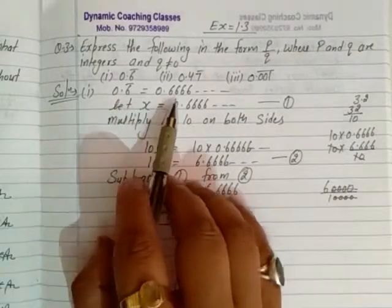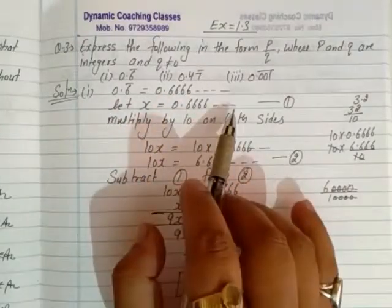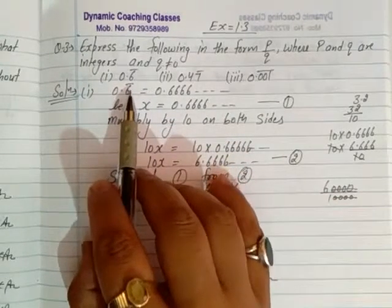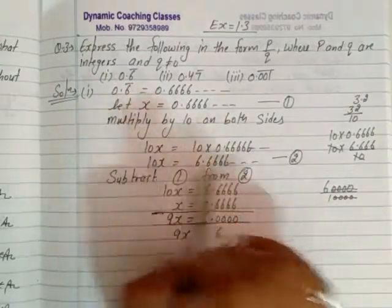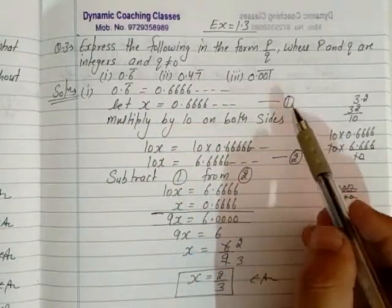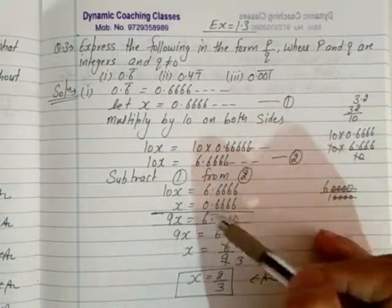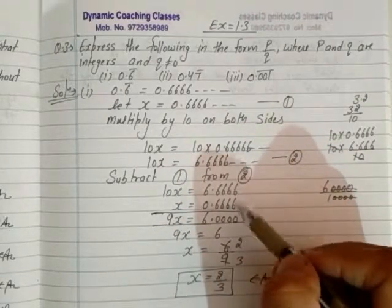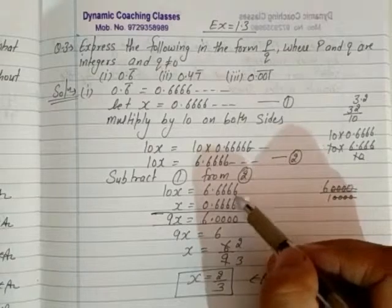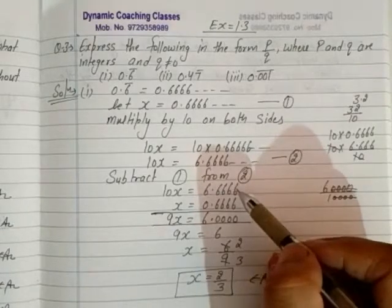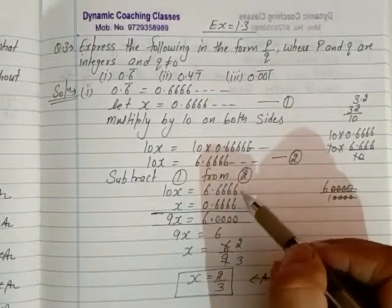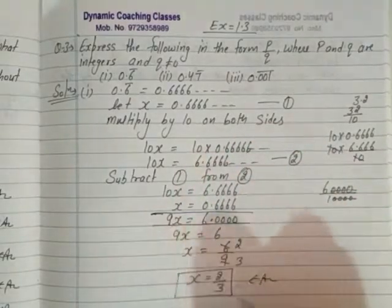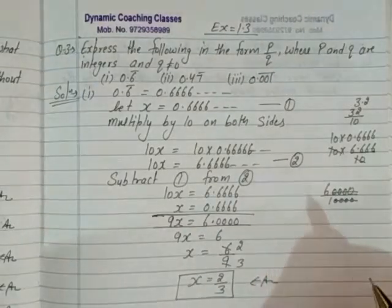What you have to write first is the value of x as the first equation. Now, looking at how many digits are under the bar, you multiply both sides accordingly. After that, you label the second equation and subtract the first from it. Make sure the repeating parts align so they cancel out, giving you 0. Then solve for x.